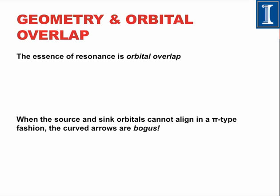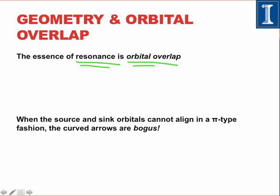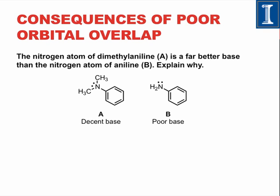Geometry and orbital overlap is the second key factor. After identifying a good source and sink next to one another, it's critical to verify that the orbitals associated with the source and sink are able to overlap. Resonance itself is an indication of orbital overlap — the overlap of localized molecular orbitals to produce delocalized orbitals spanning multiple atoms. When the source and sink orbitals are not able to align in a pi-type fashion, the curved arrows are what I call bogus — meaning that even though the source and sink are next to one another, physically the orbitals are unable to overlap efficiently.